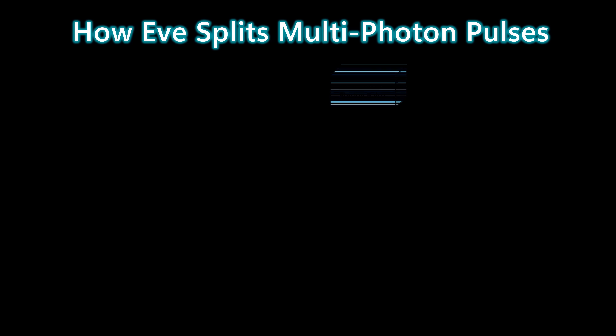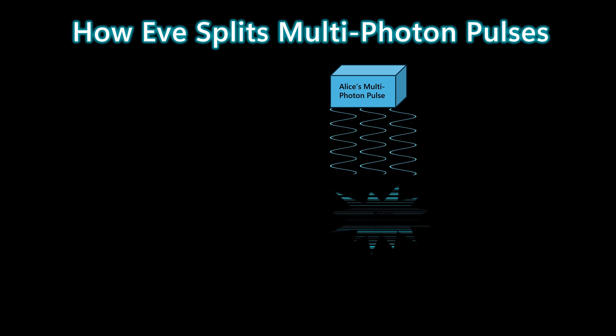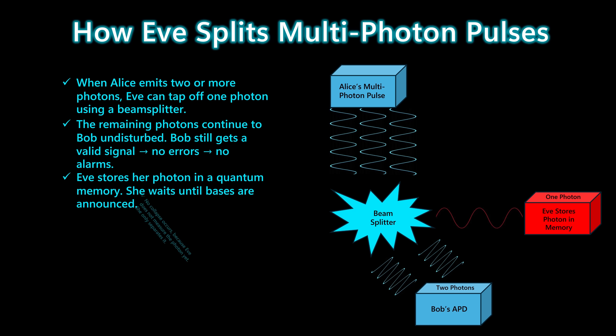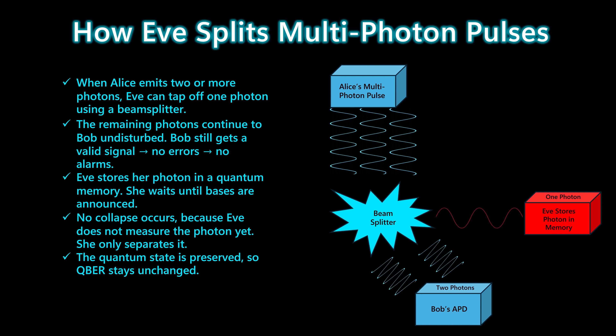In a real QKD system, whenever Alice emits a pulse containing two or more photons, Eve can take advantage of that without disturbing the channel. She places a beam splitter in the line and taps off exactly one photon from the multi-photon pulse. The remaining photons continue on to Bob, so he receives a perfectly valid signal with no errors, no extra loss, and no indication that anything unusual has happened. Eve doesn't measure her photon yet — she stores it in a quantum memory and waits until Alice and Bob publicly announce their bases. Because she hasn't observed the photon, there is no collapse of the quantum state. The copied photon and the one sent to Bob remain identical. This is why the photon number splitting attack is so powerful.